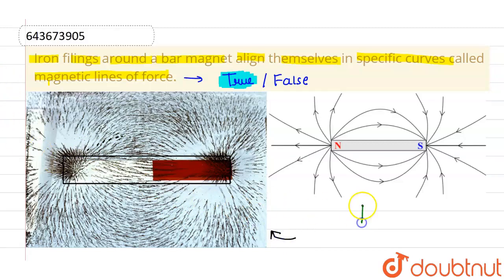So these lines which the iron filings are aligning themselves are called magnetic lines of force. Along these directions, the magnetic force acts. So this given statement that iron filings around a bar magnet align themselves in specific curves called magnetic lines of force...